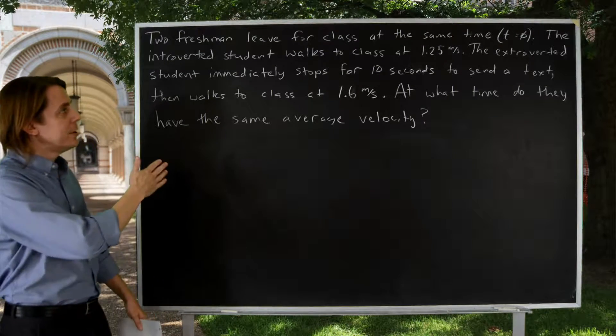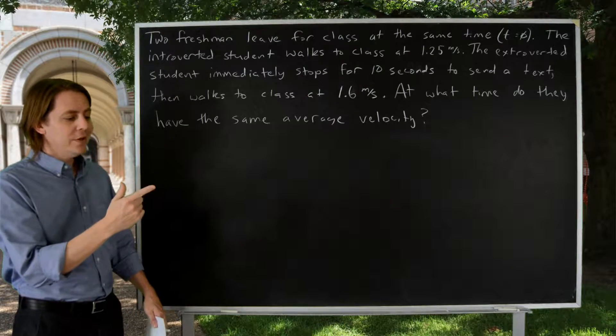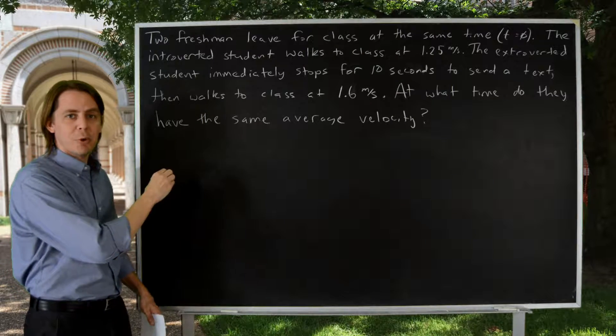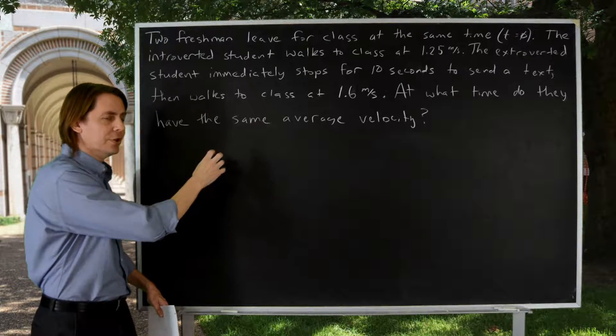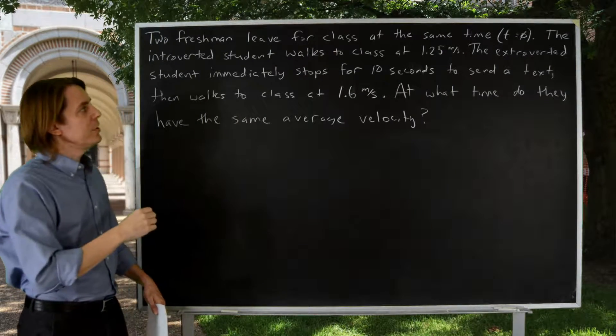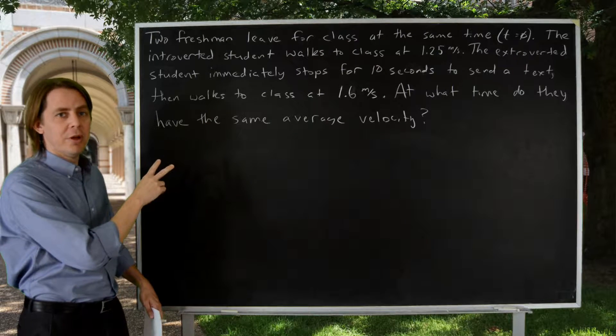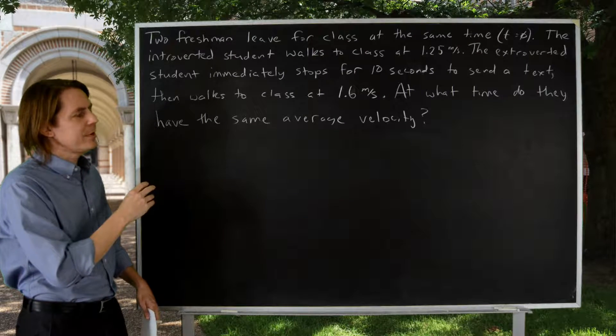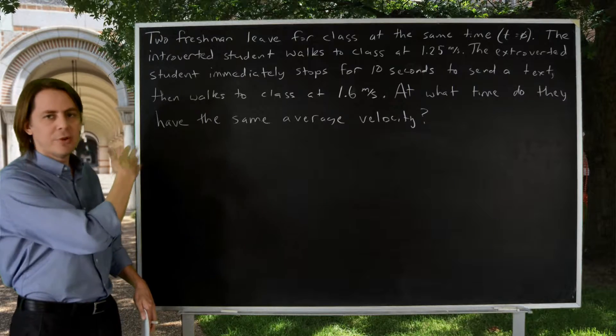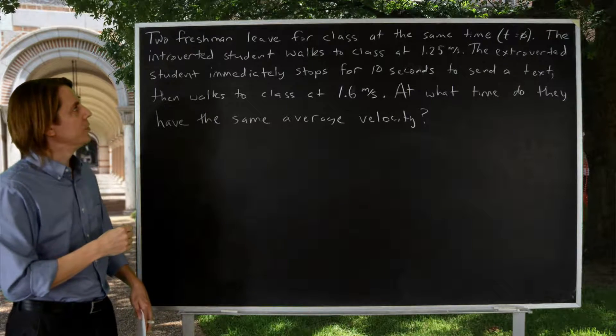There are a few ways to make one-dimensional kinematics problems complicated. One is to have objects that change their state of motion. Maybe they go and stop and then go and then stop. Another is to have two objects you have to keep up with. And another is to ask for something at a specific time. So this problem does all three of those, so I'll show you how to solve it.